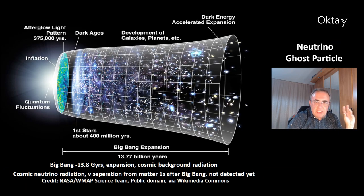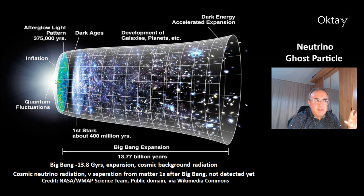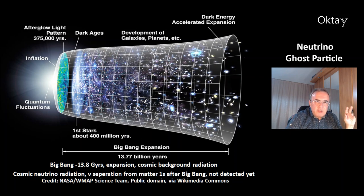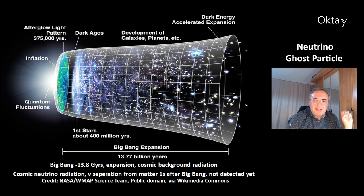This is a picture of what happened after the Big Bang. The Big Bang is still not really understood. After the Big Bang there was an inflation period, then this cosmic background radiation, then the dark ages. About 400 million years after the Big Bang, there were already the first stars, and later the galaxies. There should be not only a cosmic background radiation — the afterglow of the Big Bang — but also a cosmic neutrino background, because neutrinos separated from normal matter one second after the Big Bang. But this radiation has not been detected yet.